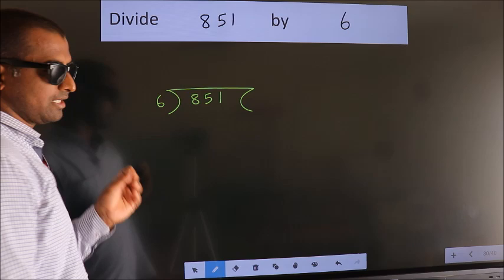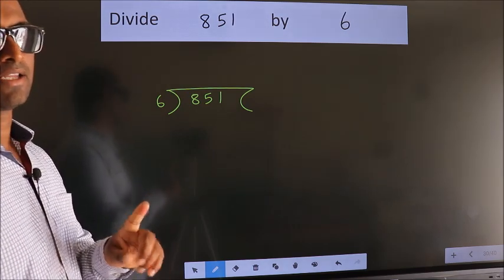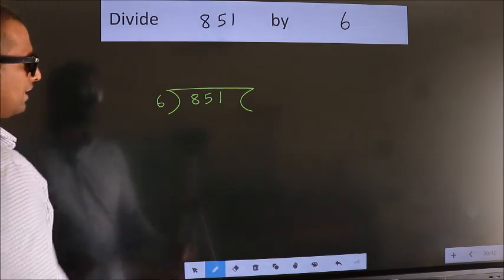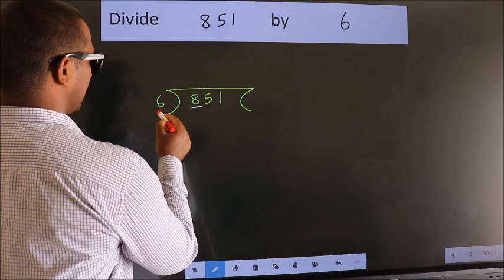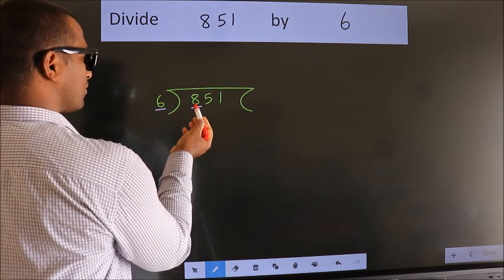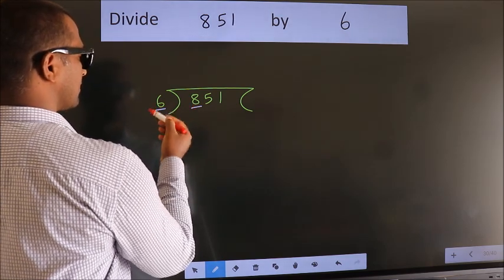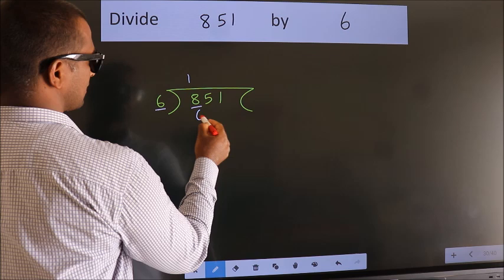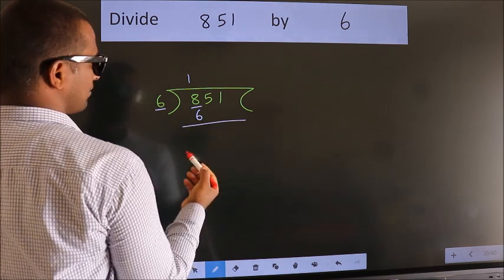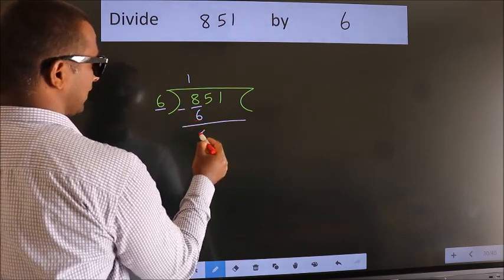This is your step 1. Next, here we have 8, here 6. A number close to 8 in the 6 table is 6 times 1 equals 6. Now we should subtract. We get 2.